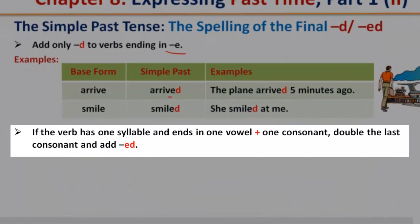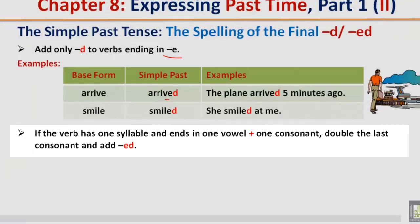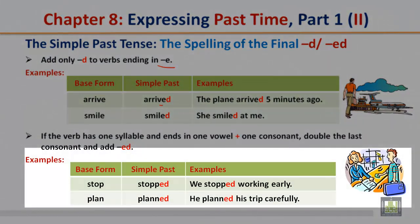If the verb has one syllable and ends in one vowel plus one consonant, double the last consonant and add ed. For example, 'stop' → 'stopped'. Why? Because it ends in one vowel and one consonant, so you double the consonant and add ed. Example: 'We stopped working early.' Remember, a consonant is anything that is not a vowel — here you double the p. Similarly, 'plan' → 'planned'. Example: 'He planned his trip carefully.'